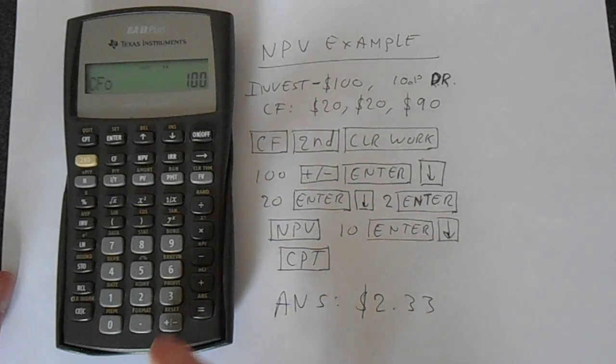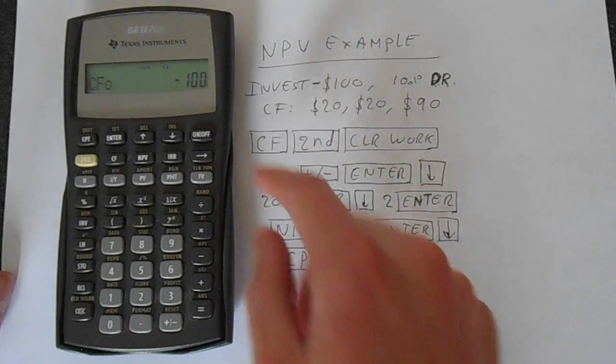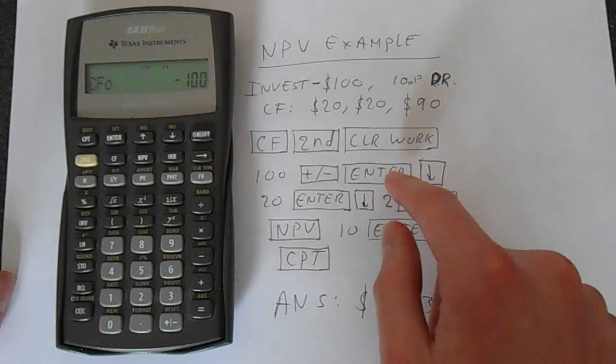You switch the sign—press it again, it becomes positive; press it again, it's negative. I'm just showing you that. Make sure it's negative; switch the sign with that key.